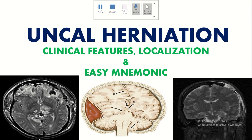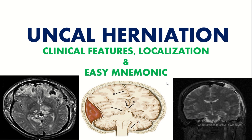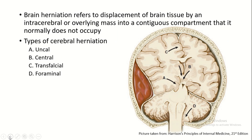Today we'll be talking about brain herniations. We'll basically talk about uncal herniation, however we'll touch briefly about other types of brain herniation too, and we'll also discuss an easy mnemonic to remember the clinical features of uncal herniation. Brain herniation refers to displacement of brain tissue by an intracerebral or overlying mass into a contiguous compartment that it normally does not occupy.